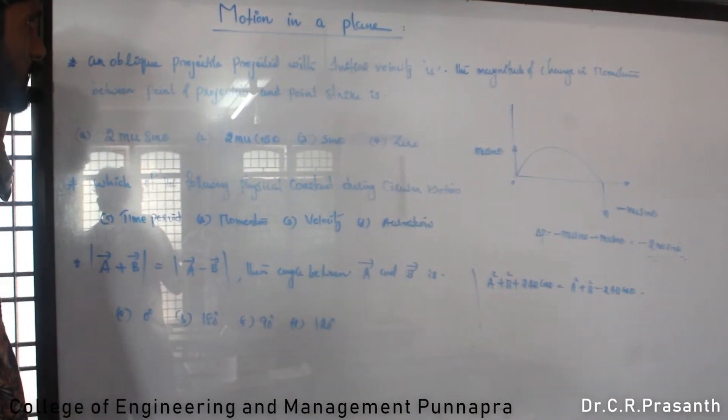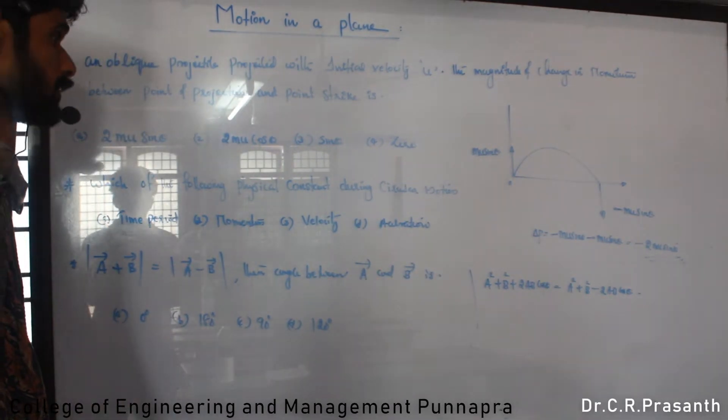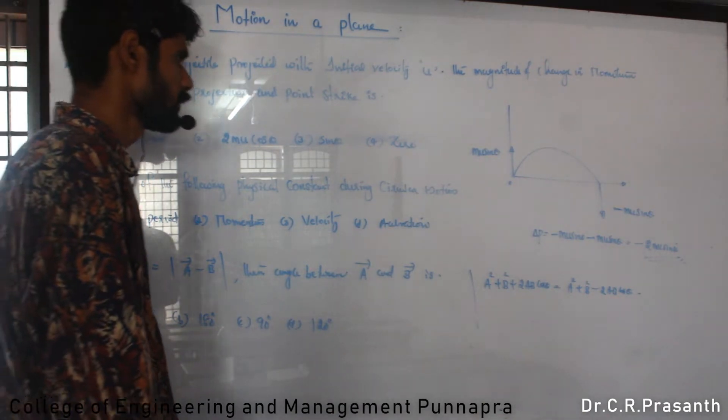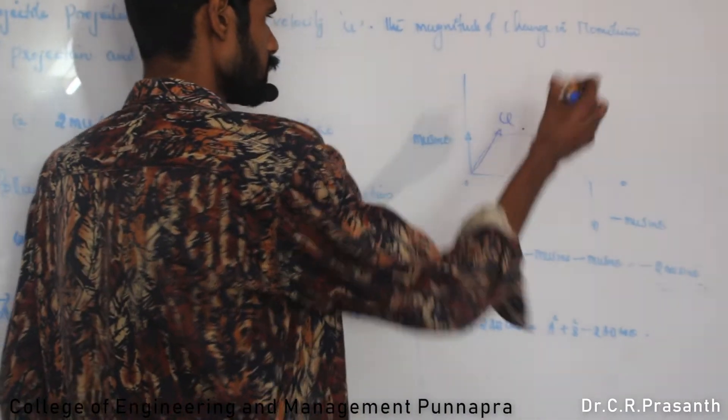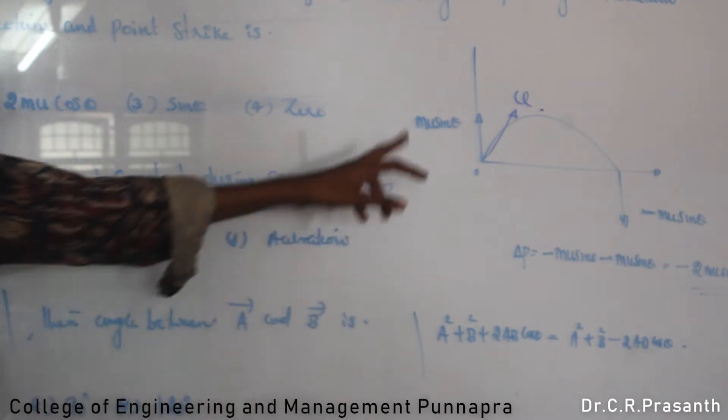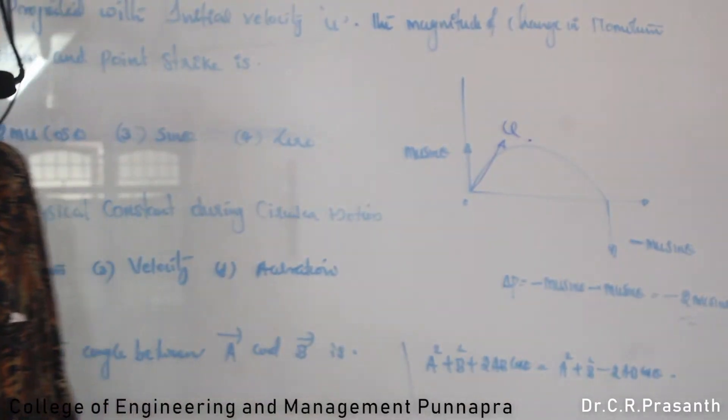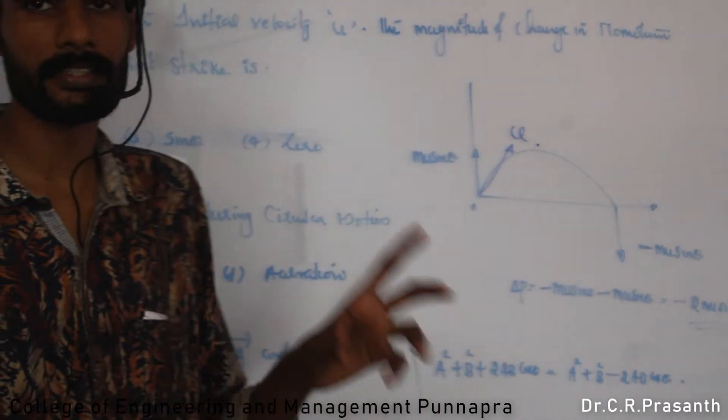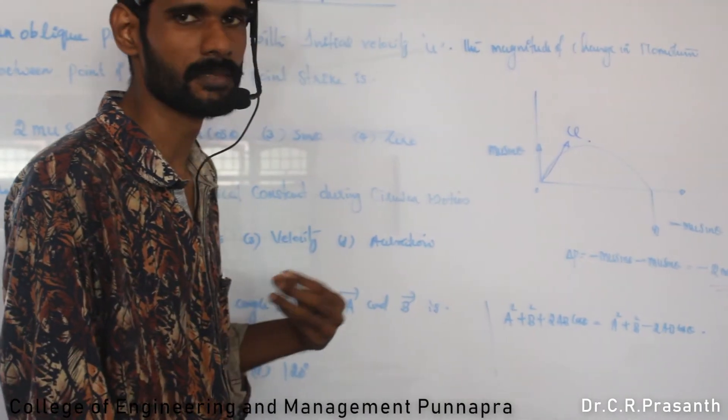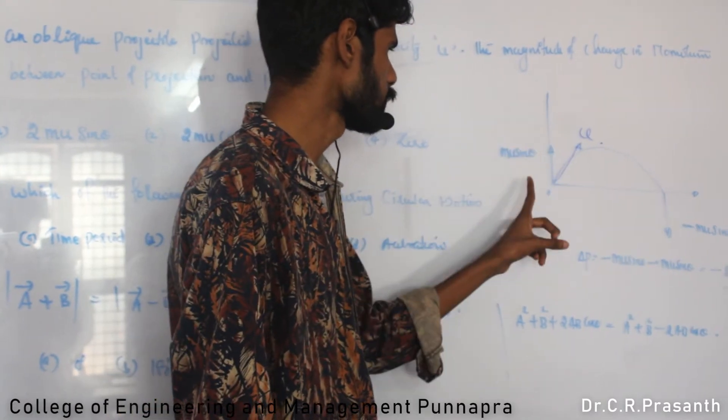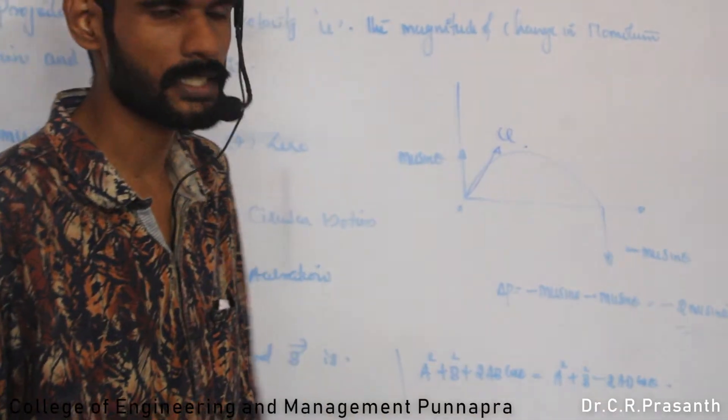For a projectile projected with initial velocity u, the magnitude of change in momentum between point of projection and point of striking. Initial velocity is u: u sin theta along vertical direction and u cos theta along horizontal direction. The horizontal direction velocity is constant, so no change in momentum. We have to find the change in momentum in the vertical direction. That is m u sin theta in upward direction, and minus m u sin theta in downward direction. Change in momentum is m u sin theta minus minus m u sin theta.